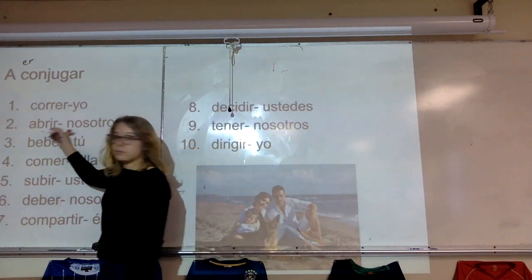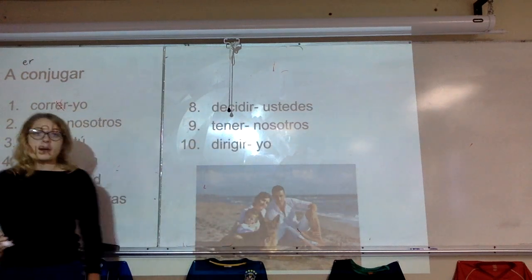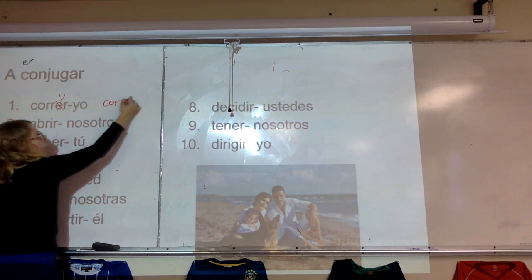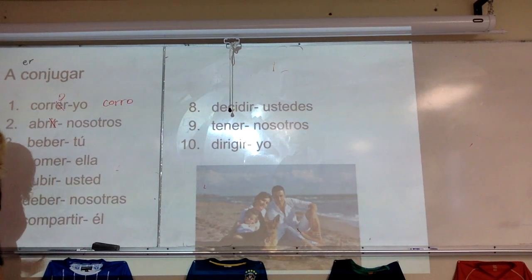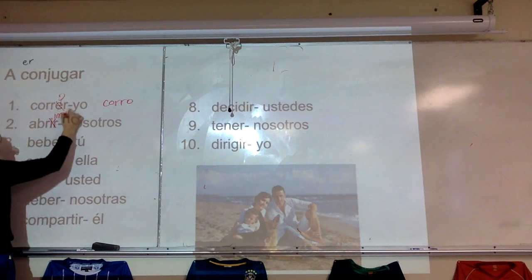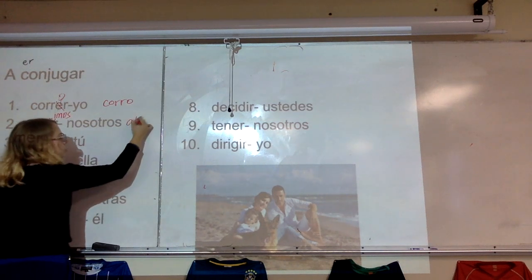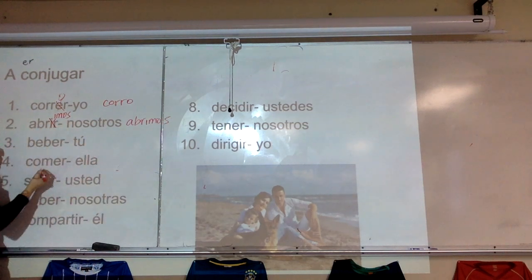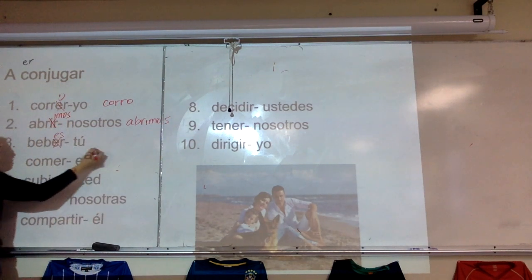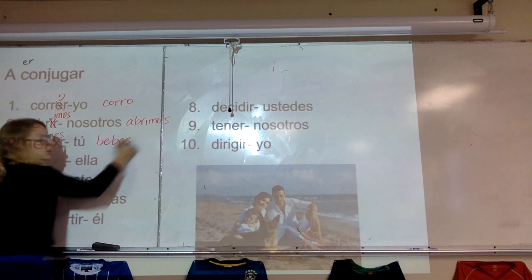For correr, I'm just taking off this ER and I'm adding an o. So, my final form will be yo corro, I run. Right? For abrir, I take off the IR. I add imos, because it's an IR verb, not emos, and I'm going to say nosotros abrimos. We open. For tú, I'm going to take off ER and add es. So, tú bebes. You drink.